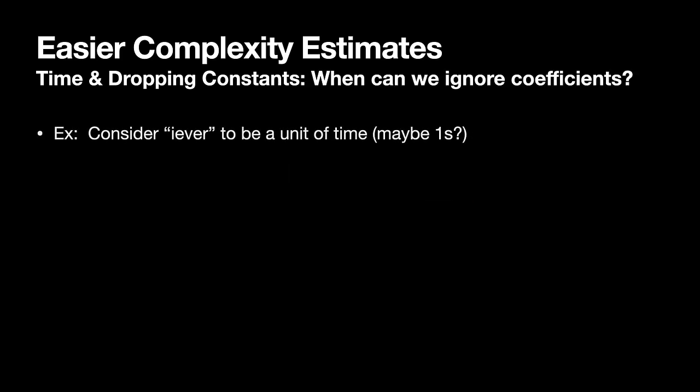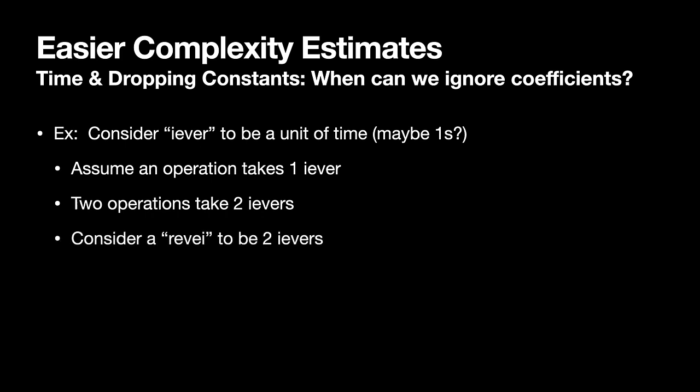Consider an eaver to be a unit of time. I took this from my surname, tried several other funny made-up words and almost all of them had a meaning somewhere. So an eaver is a unit of time, maybe it's one second, maybe it's something much less time than one second. Assume an operation takes one eaver. And then maybe two operations take two eavers. So we could consider a revi to be two eavers, a different unit of time that represents twice as much time as a single eaver.